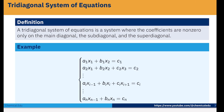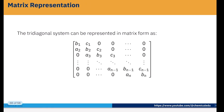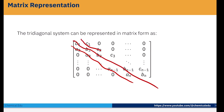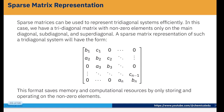How do you solve this? A tri-diagonal system of equations is a system where the coefficients are non-zero only on the main diagonal, the sub-diagonal, and the super-diagonal. For example: a1x1 plus b1x2 equals c1; a2x1 plus b2x2 plus c2x3 equals d2, and so on. The other elements are zero, so this is also called a sparse matrix representation.